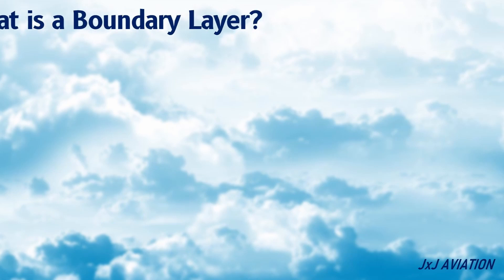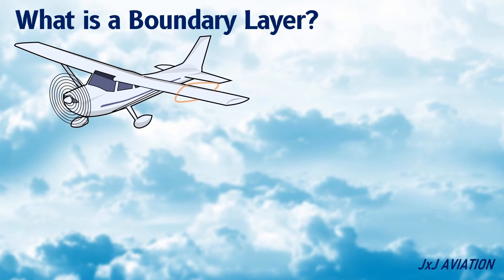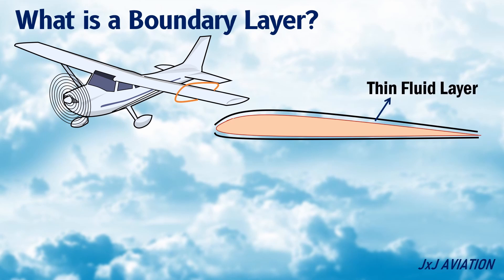What is a boundary layer? A boundary layer is a thin fluid layer which is formed on the surface of an object moving across the fluid. This boundary layer is created due to friction between the fluid and the moving surface.